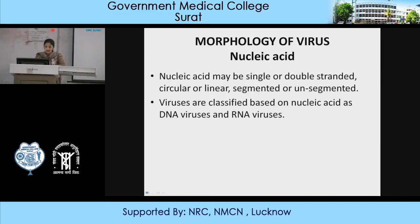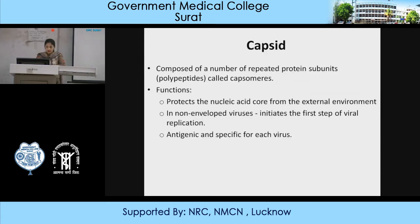Viruses are classified based on nucleic acid — either as DNA viruses or RNA viruses. The nucleic acid is surrounded by a capsid, which acts as a protective layer. The capsid is composed of a number of repeated protein subunits called capsomeres. The function of the capsid is to protect the nucleic acid core from the external environment.